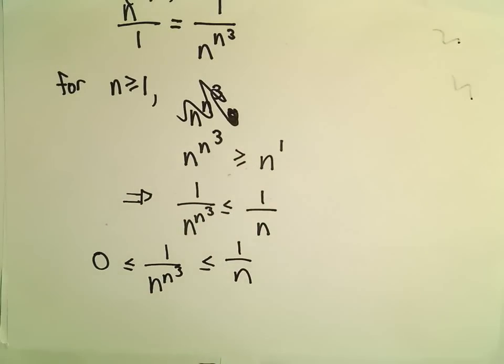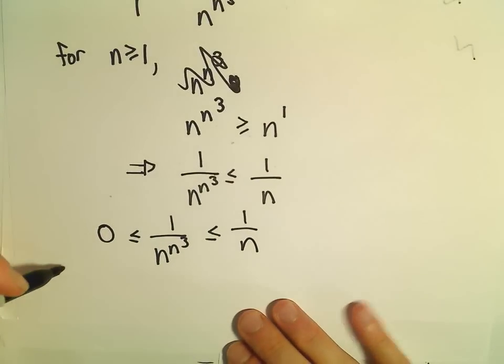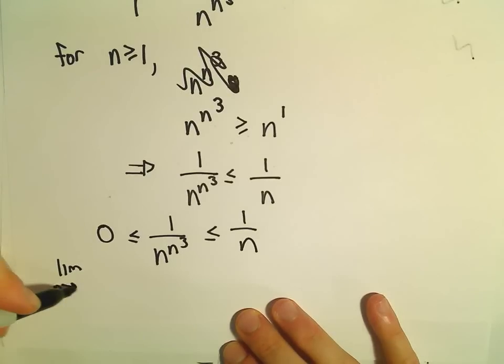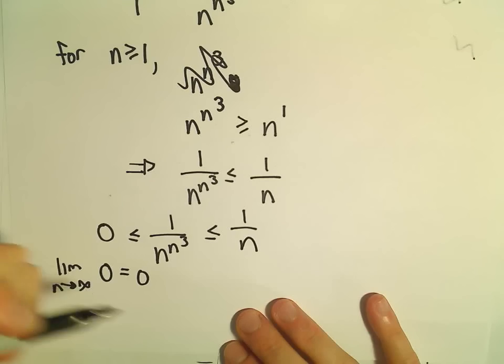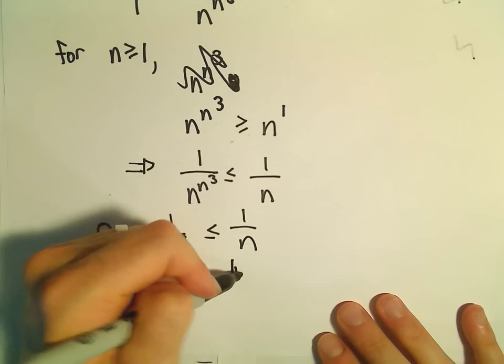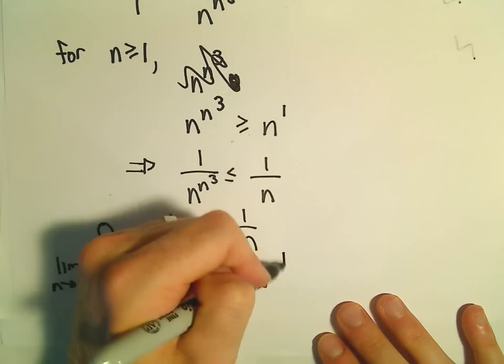So now we can bring in our squeeze theorem. We can simply look at the limit as n goes to infinity of the left side, which is 0. Well, that limit certainly is 0.